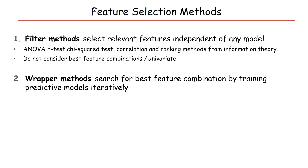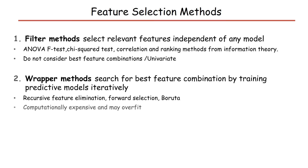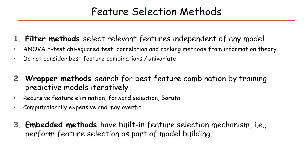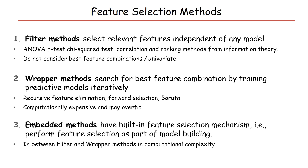Wrapper methods search for the best feature combination by training predictive models iteratively. Examples include recursive feature elimination, forward selection, and Boruta. Wrapper methods can be computationally expensive and at times overfit. Finally, embedded methods have a built-in feature selection mechanism — they perform feature selection as part of model building. In terms of computational complexity, they are between filter and wrapper methods. Examples include LASSO regression, elastic net, and stability selection.